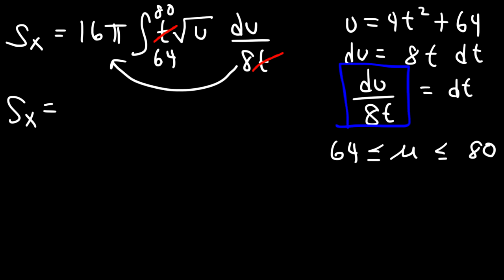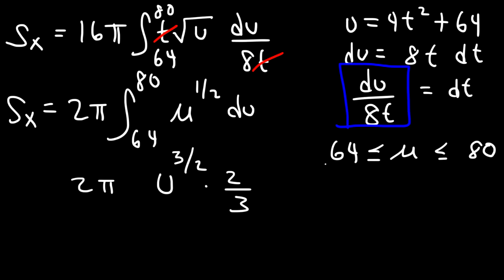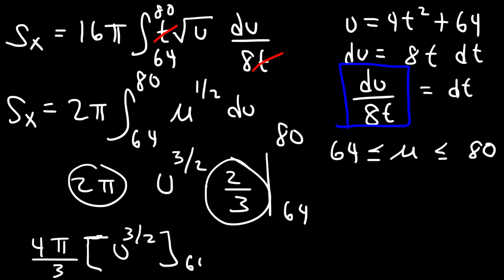I'm going to move the 8 to the outside, so 16π divided by 8 is 2π. We integrate from 64 to 80 and the square root of u is u to the 1/2 times du. The antiderivative of u to the 1/2: adding 1 gives 3/2, and we multiply by 2/3. So 2π times 2/3 is 4π/3, times u to the 3/2, evaluated from 64 to 80.